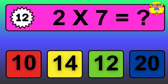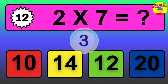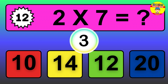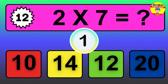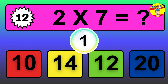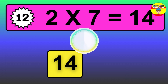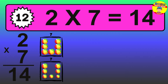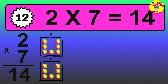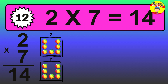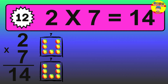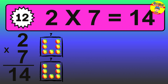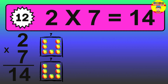Question 12. 2 times 7 equals what? The answer is 2 times 7 is 14. To calculate, we have 2 groups with 7 balls each one. So, how many balls do we have? 14 balls.